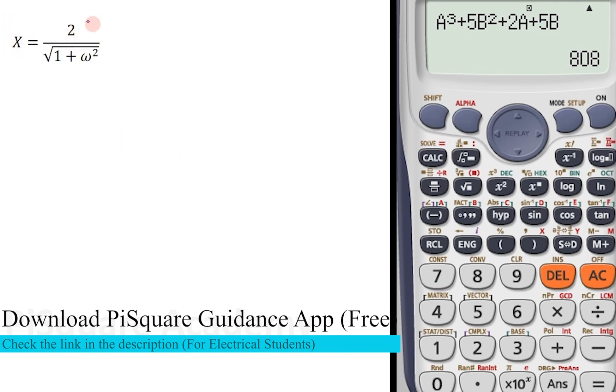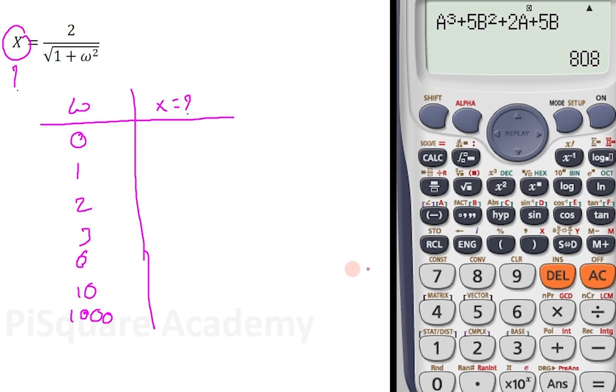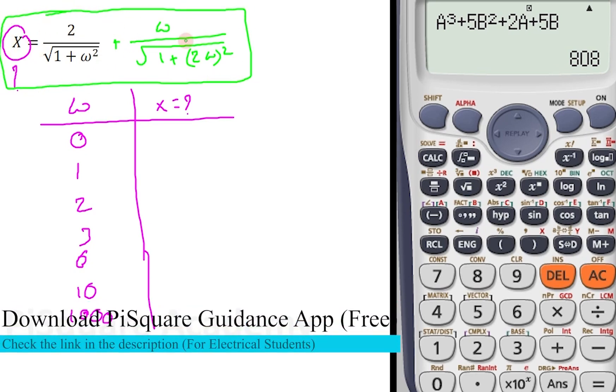Now, this is a task for you. You do this task. What is the value of X? I need to find the value of X when omega value is changing from, suppose when omega value is 0, when omega value is 1, when omega value is 2, 3, 7, 6, 10, 100 or 1000. So, find all these values. Let's see how you're going to get that. Or you can add one more term here to make things a little more complex. Let's add omega by square root of 1 plus 2 into omega whole square. You take this also. You try this now. This entire function. This is X. You try this. You want to change the variable, you change it. You can create your own task and you can enjoy. You can have a good command on this calc button and make use of it.